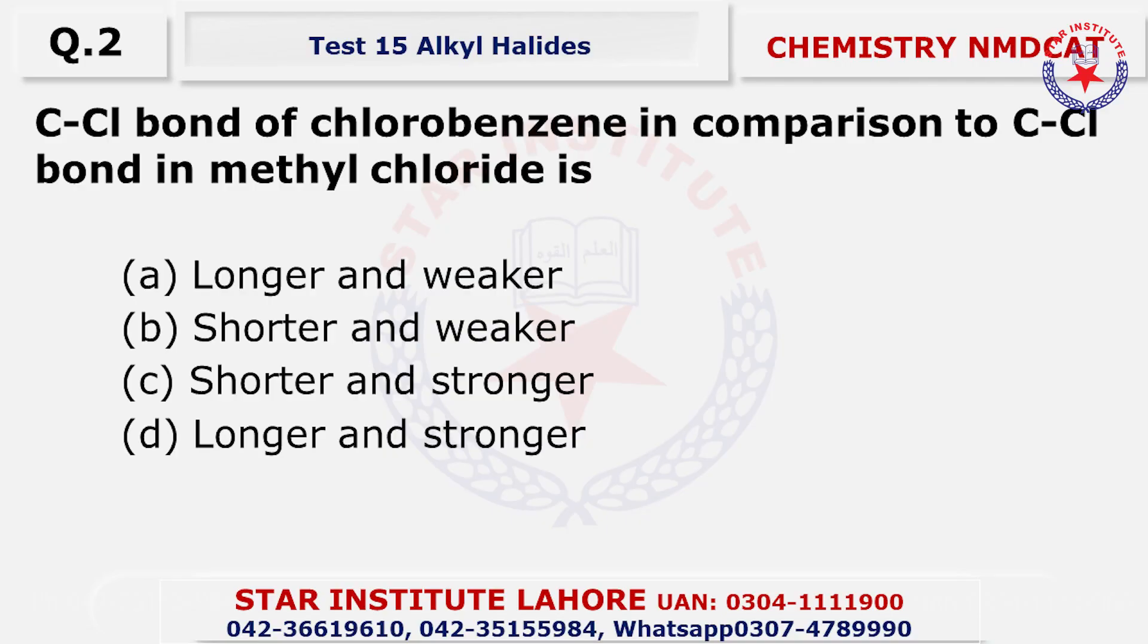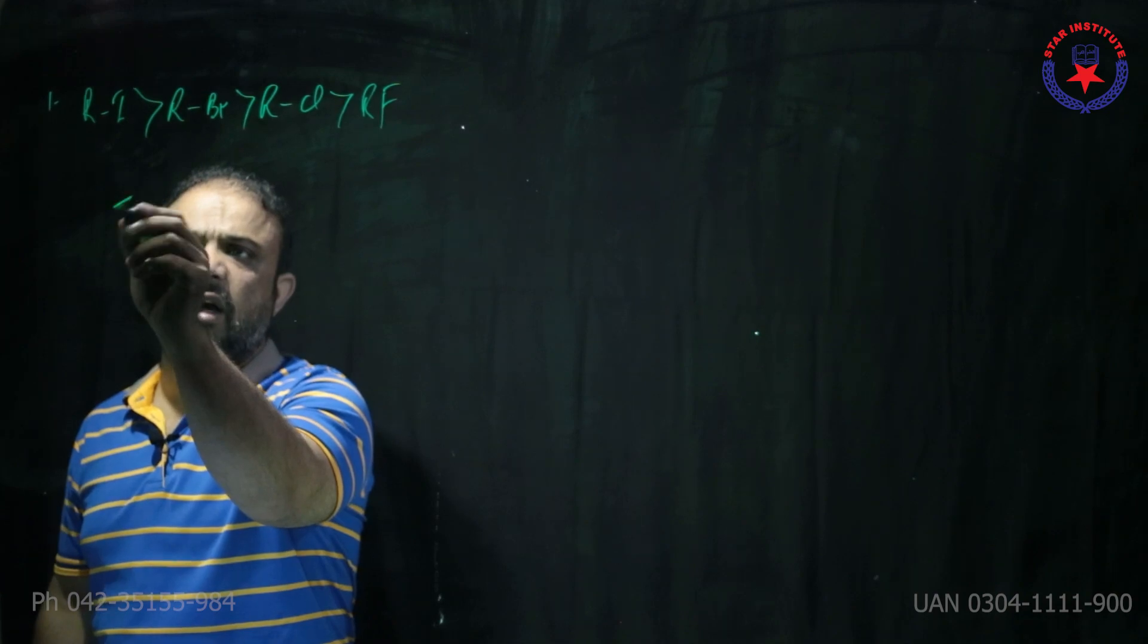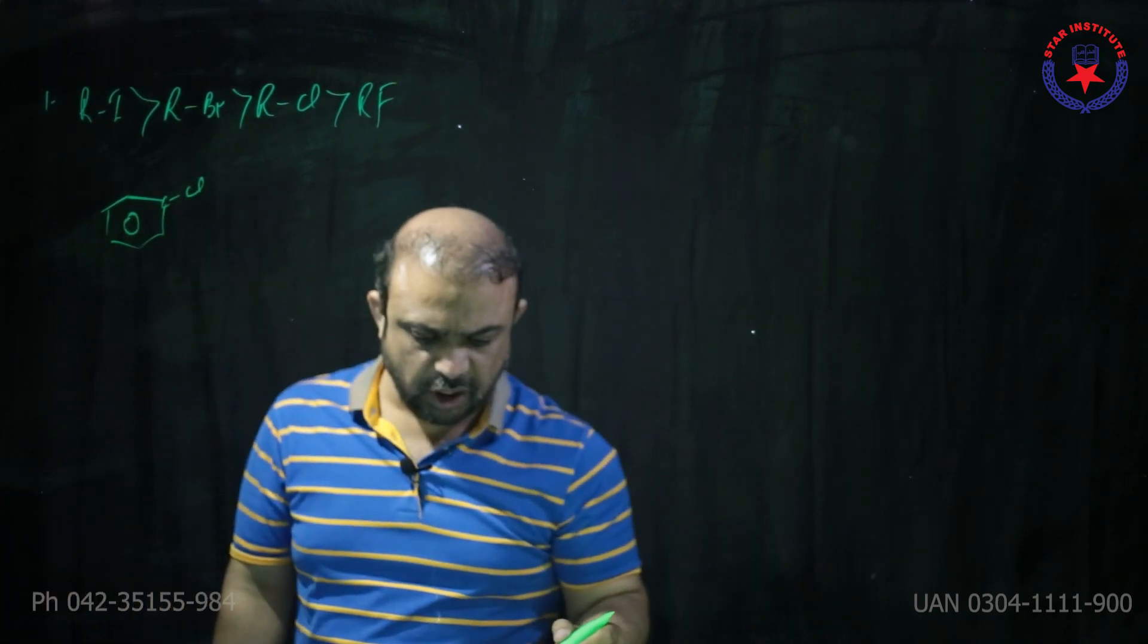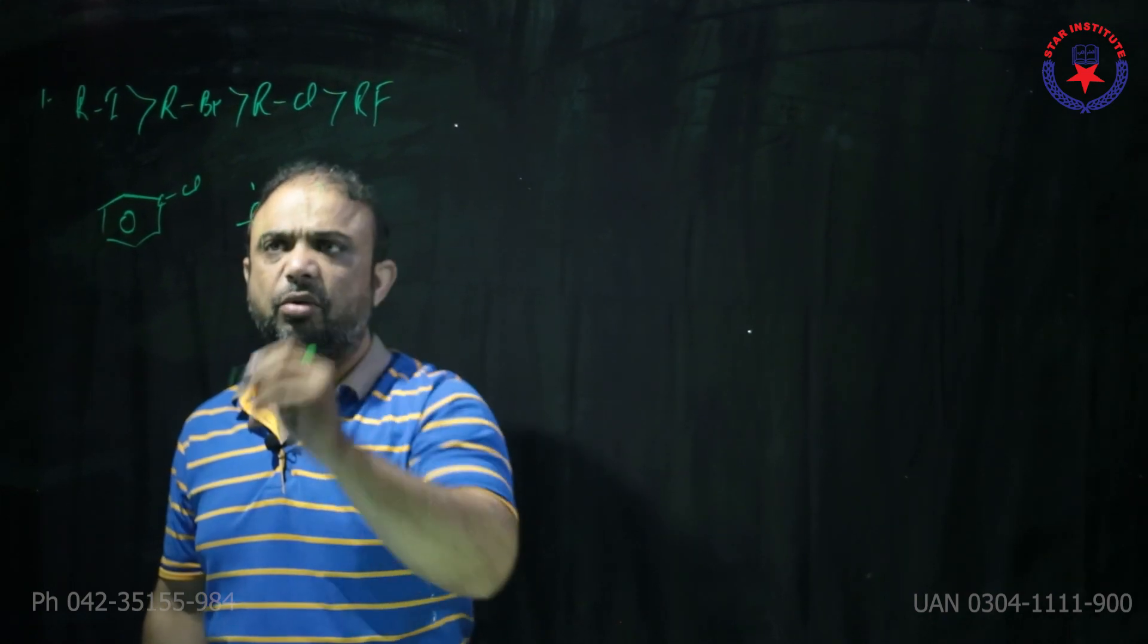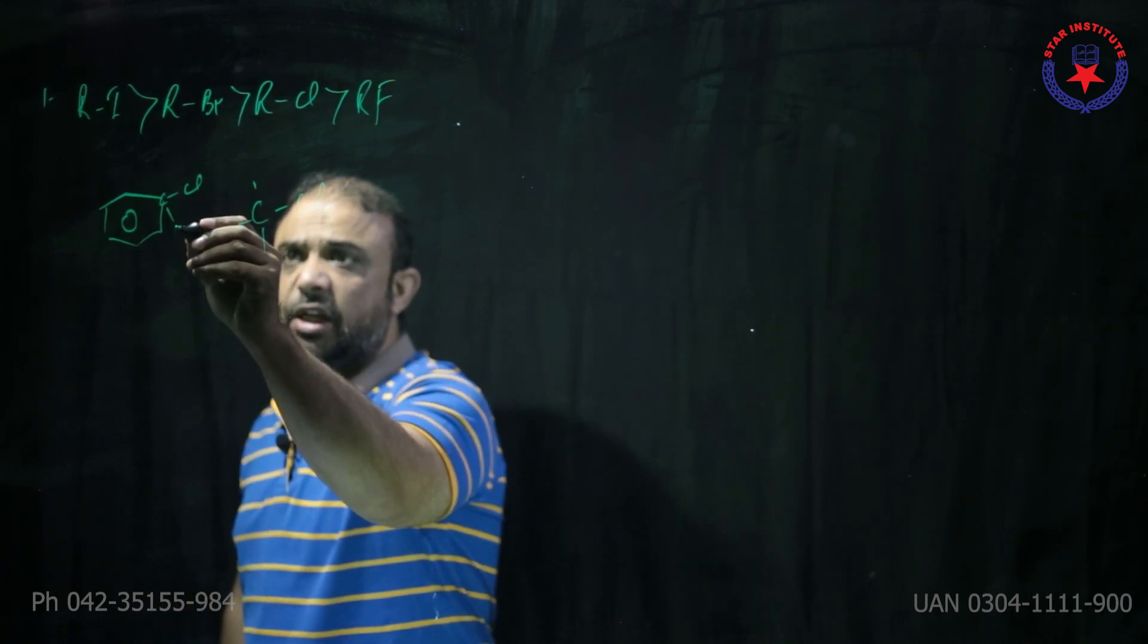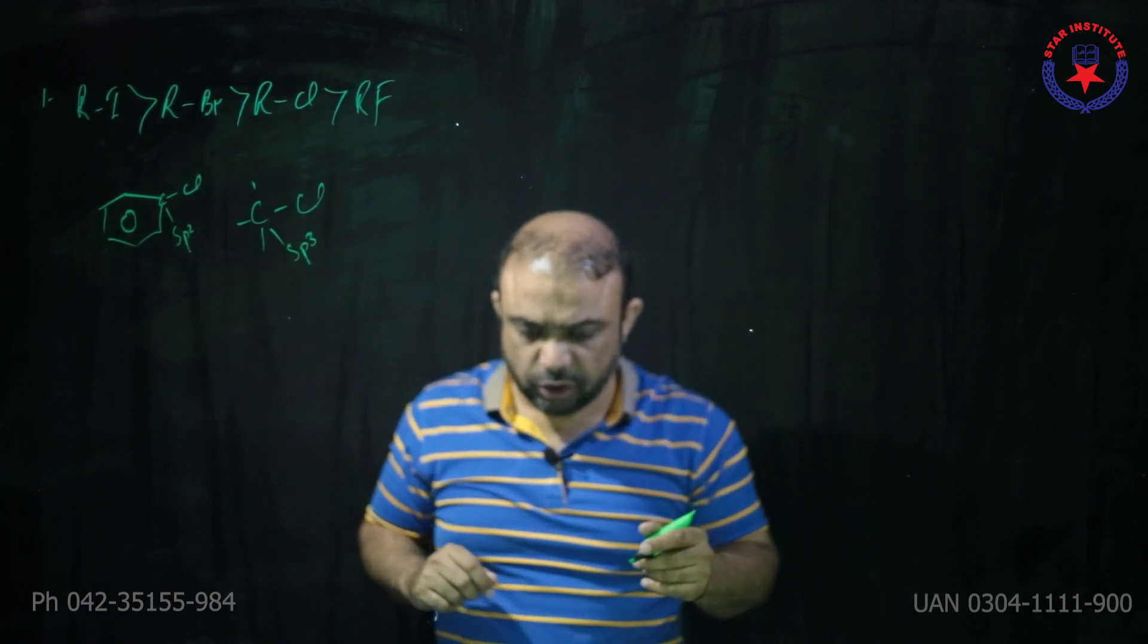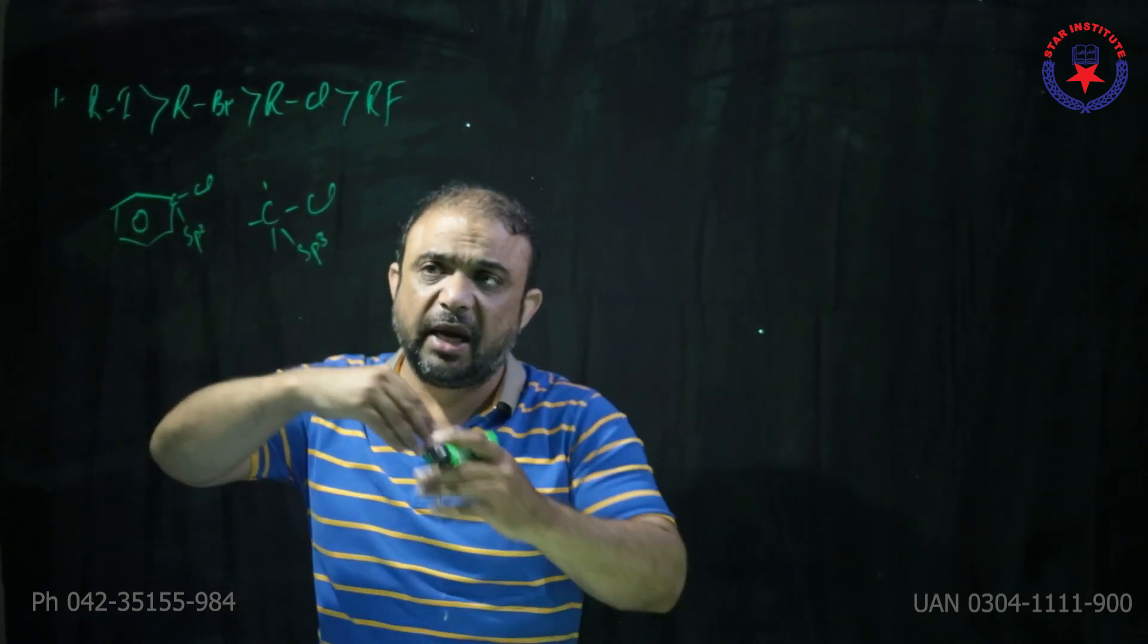Question number two, carbon chlorine bond of the chlorobenzene in comparison with the carbon chlorine bond in the methyl chloride is shorter and stronger. Zara gaur se dekhiye ga. Yeh carbon chlorine bond keh raha hai, chlorobenzene ka. Zara dekhiye, yeh benzene hai, aur is carbon ka jo chlorine se bond hai, isko compare kerna hai aapne. Kiske saath? With methyl chloride. Why this bond is shorter and this bond is longer? Beta, hybridization ka fark dekhiye ga, yeh sp2 hybridize hai, yeh sp3 hybridize hai, sp3 is elongated, so this bond should be shorter. Dousri baat, stronger because sp2 hybridize hai, extent of overlapping jada hai.